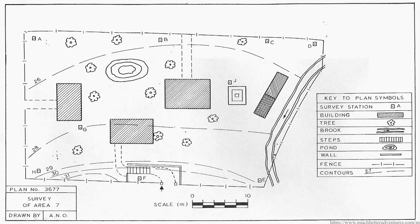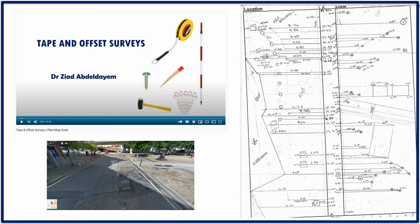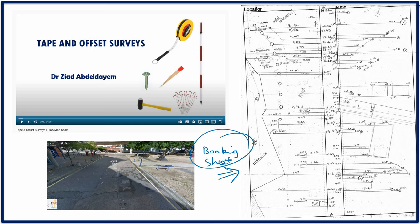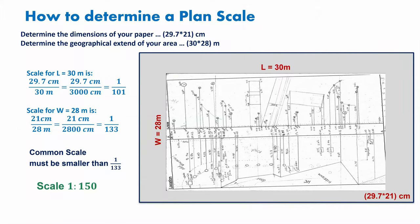Now let's take an example. In a previous video I explained in detail how to collect measurements using the tape and offset method — please watch that video to understand how we collected these measurements shown in the booking sheet on the right. Based on these measurements, we are now going to produce a plan to a scale. I explained in that video how to find the best scale to fit any size of sheet.